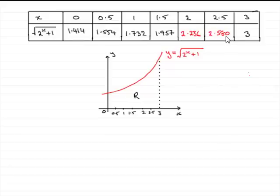But for the next part, part B of this question, we've got to use the trapezium rule to find this area R bounded by the curve, the lines x equals 0 and x equals 3.